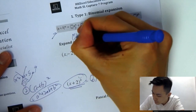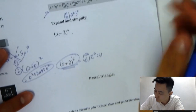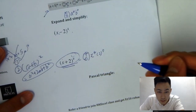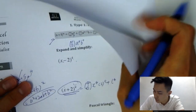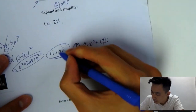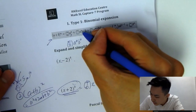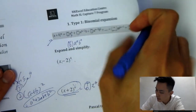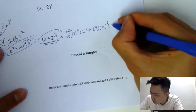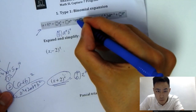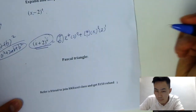So this is N choose 0, A to the N, B to the power 0 — which is 2 to the power 0. Then plus: 4 choose 1, and the first term is x. For the power of x it's N minus 1, so 4 minus 1 is 3. The second term is 2 to the power 1. If I don't write anything, that means power 1.